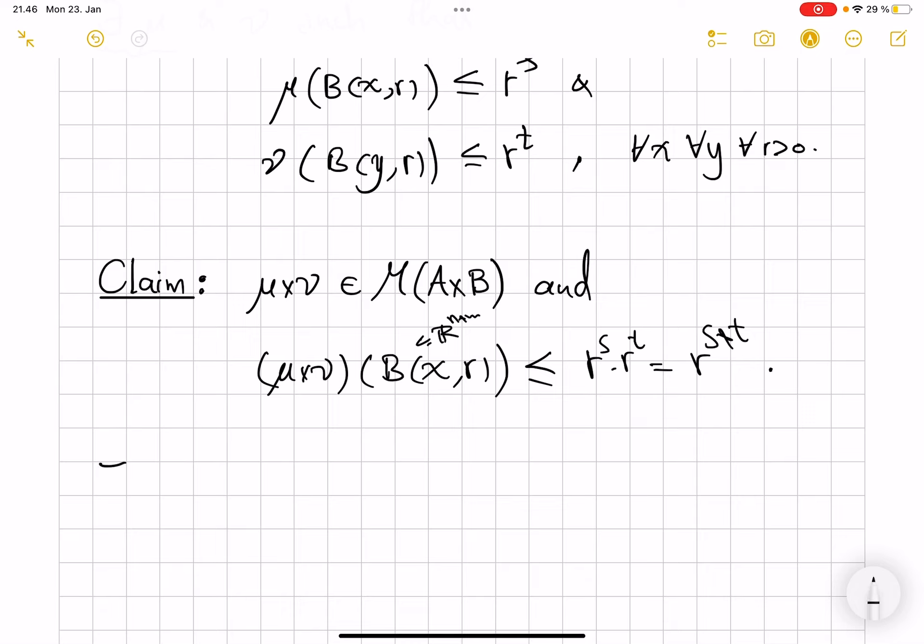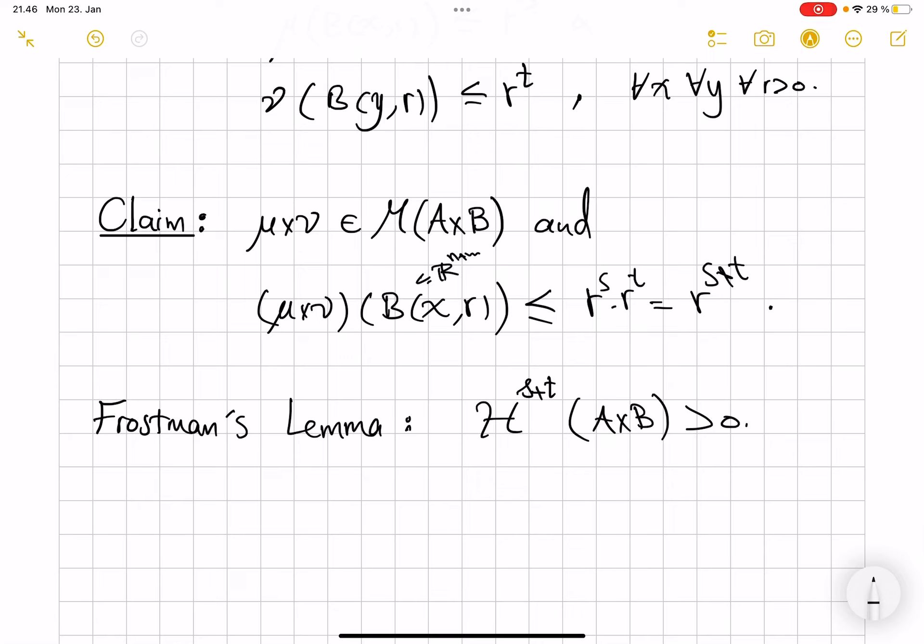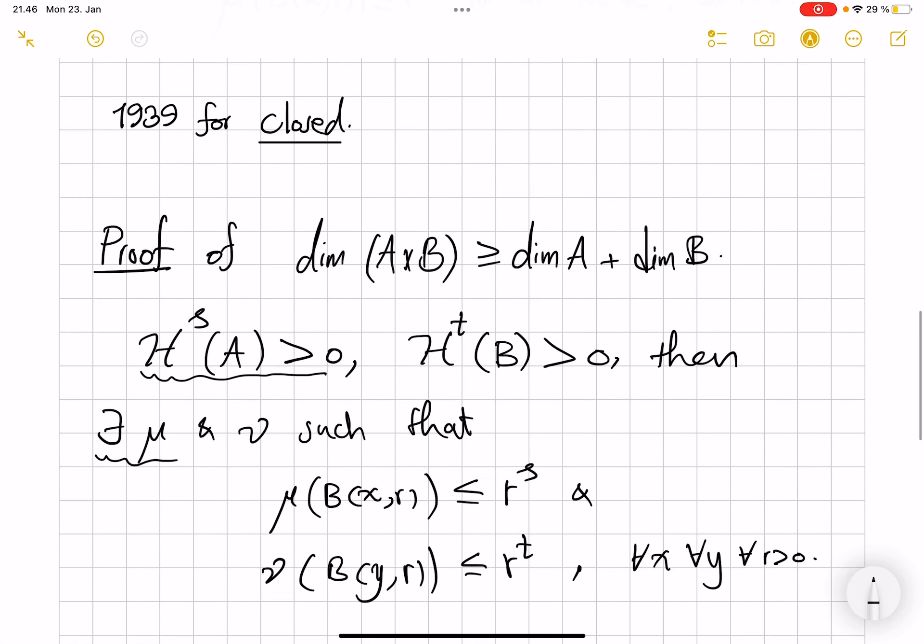So therefore, Frostman in the backward direction tells us that H^(s+t) of A × B is positive. And whenever you have Hausdorff measure to some number of a set positive, that by definition means that the dimension of that set is at least s+t, which for us was dimension of A plus dimension of B. Sorry for this lack of attention to the case of these being zero, and let's say I leave it as an exercise for myself, first of all, to decide what to do in that situation.